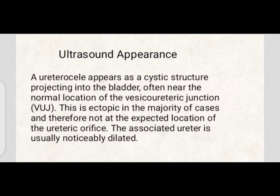A ureterocele appears as a cystic structure projecting into the bladder, often near the normal location of the vesico-ureteric junction. As seen in this video, you can again see the right-sided ureterocele.